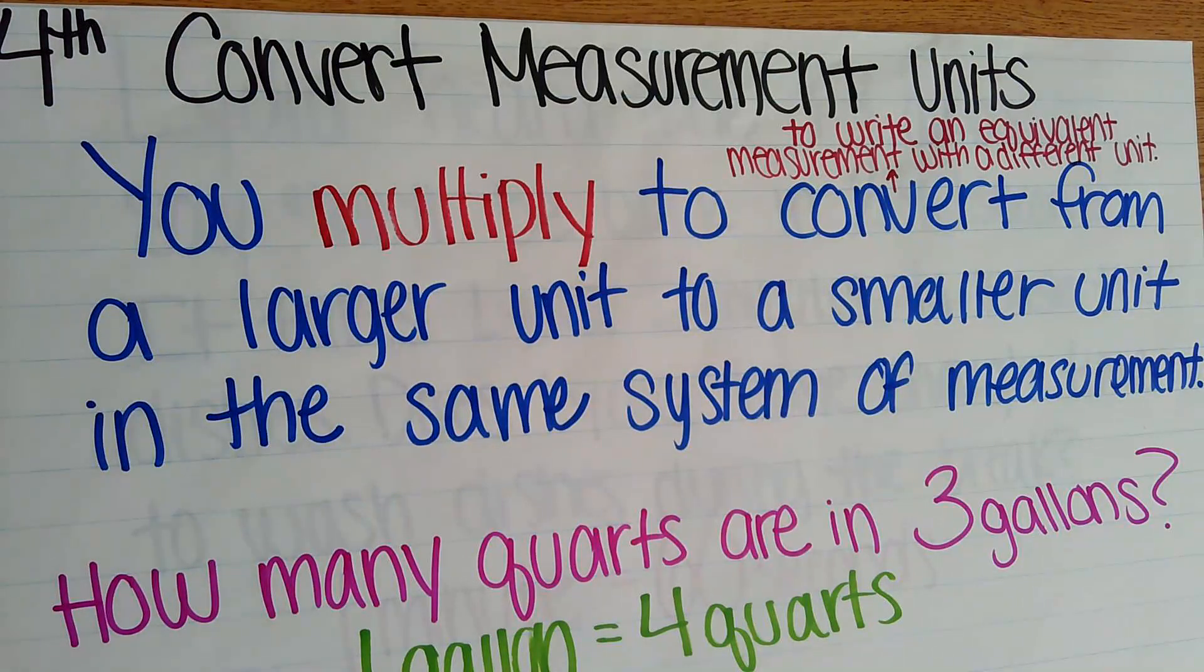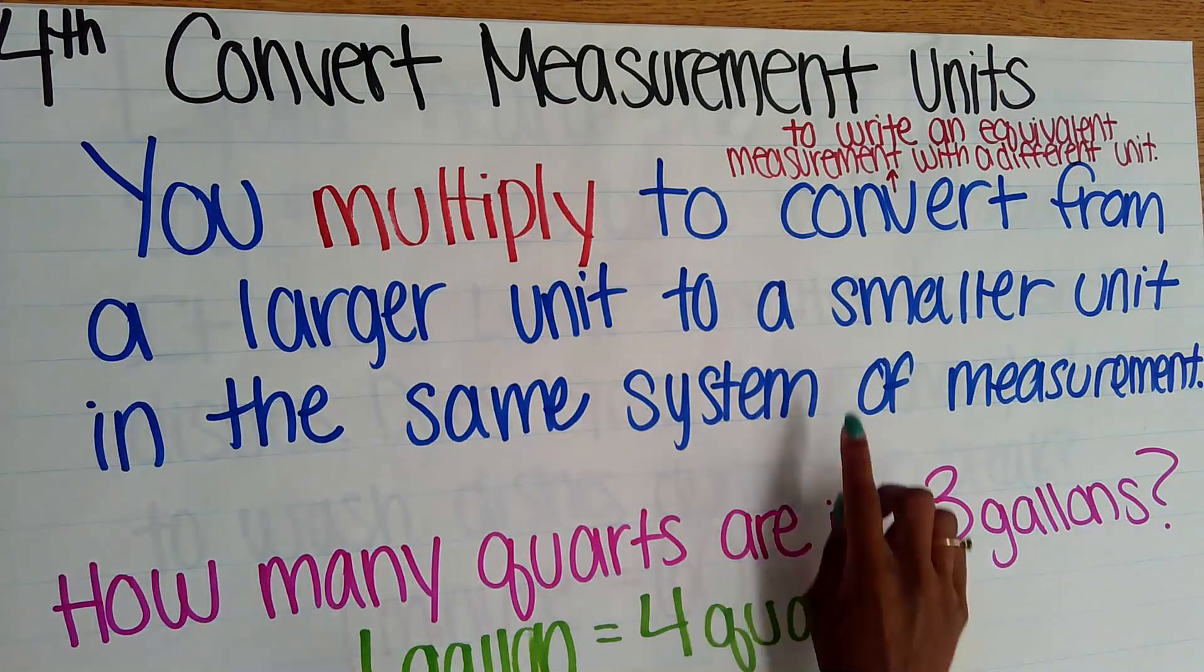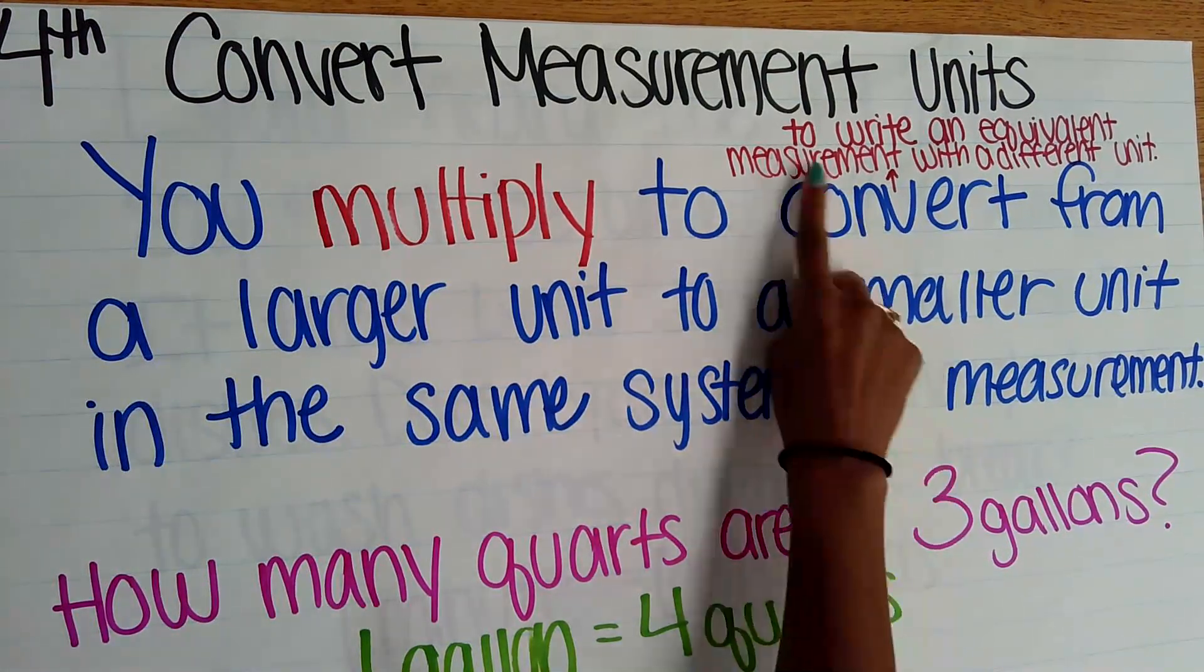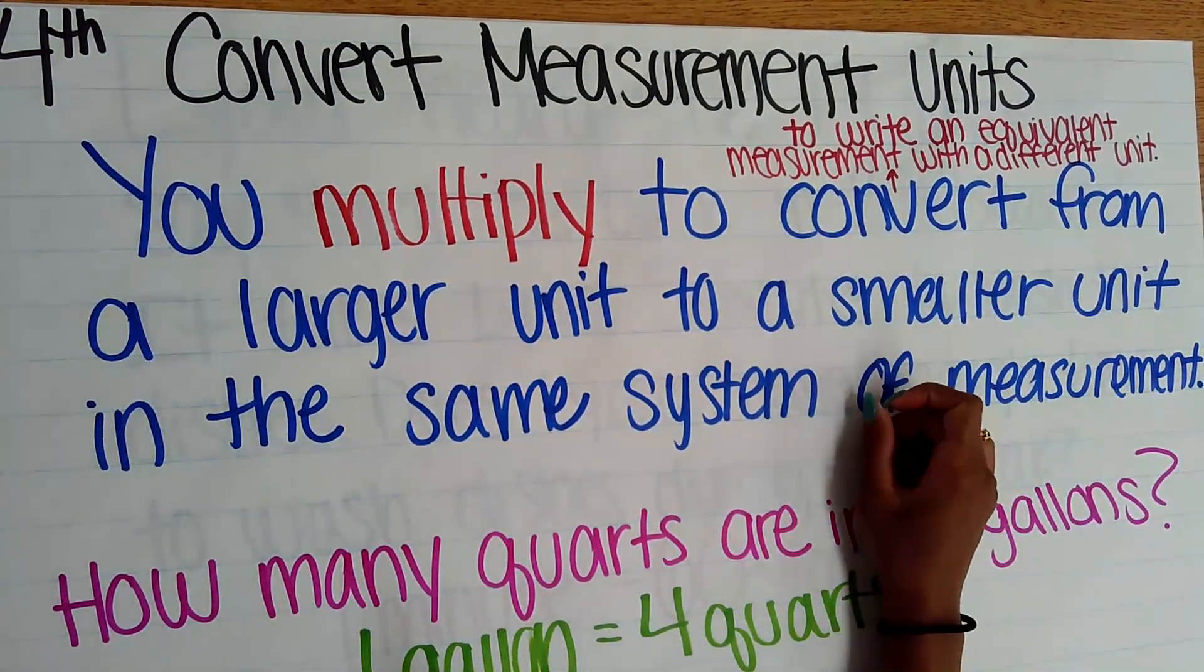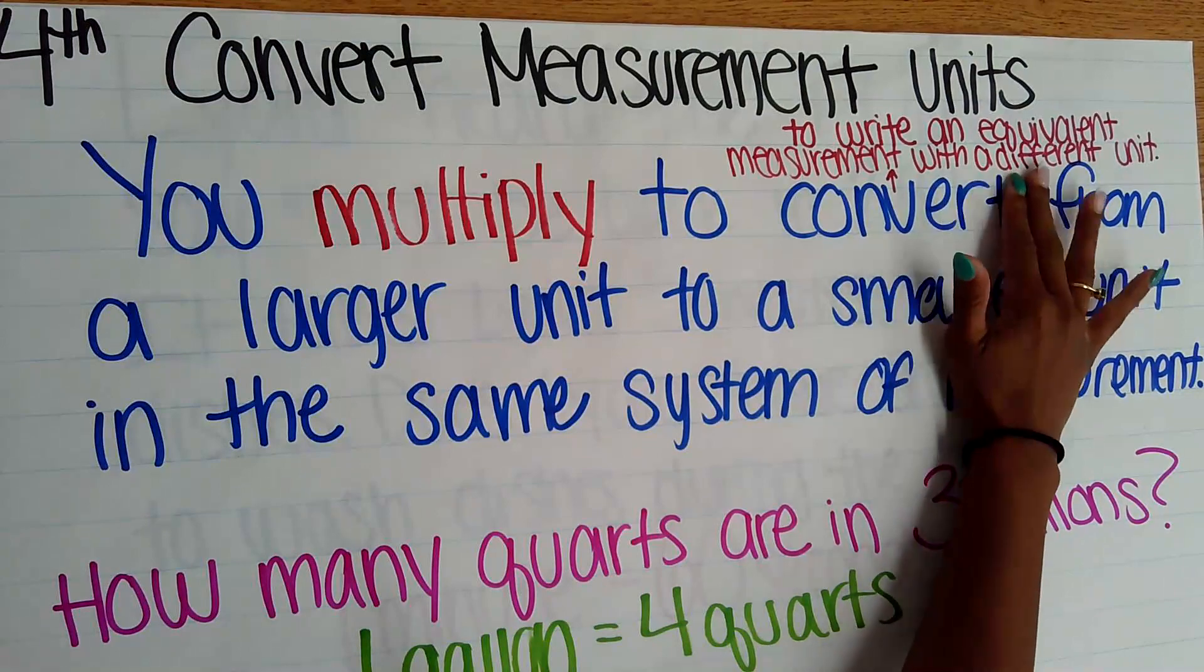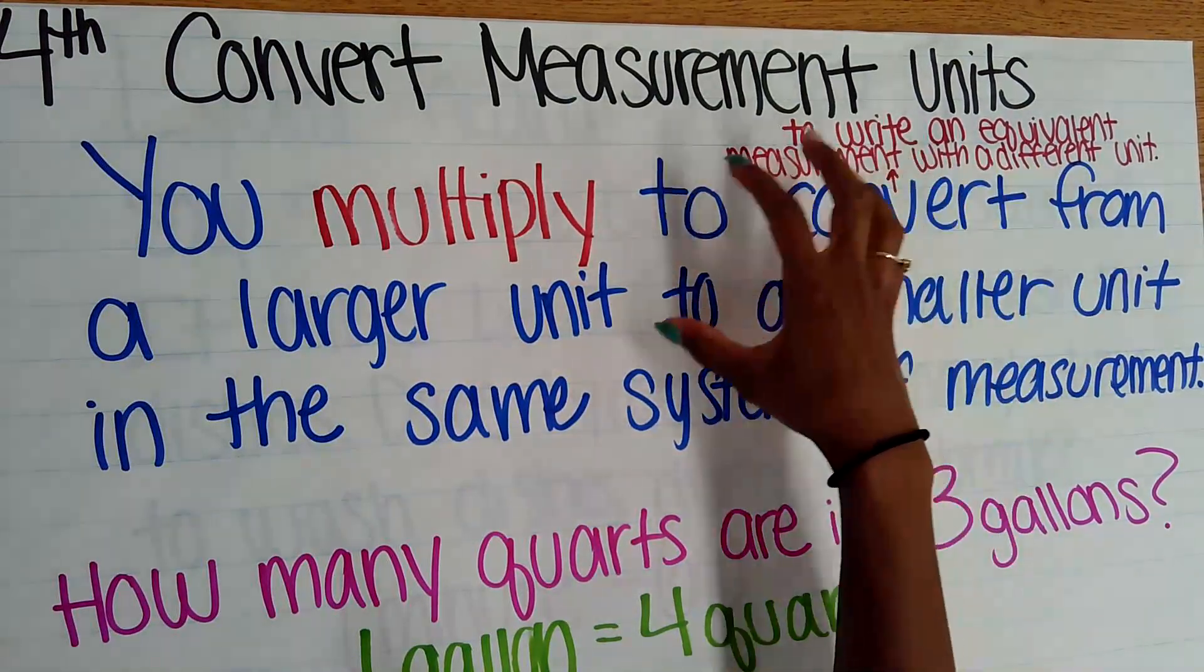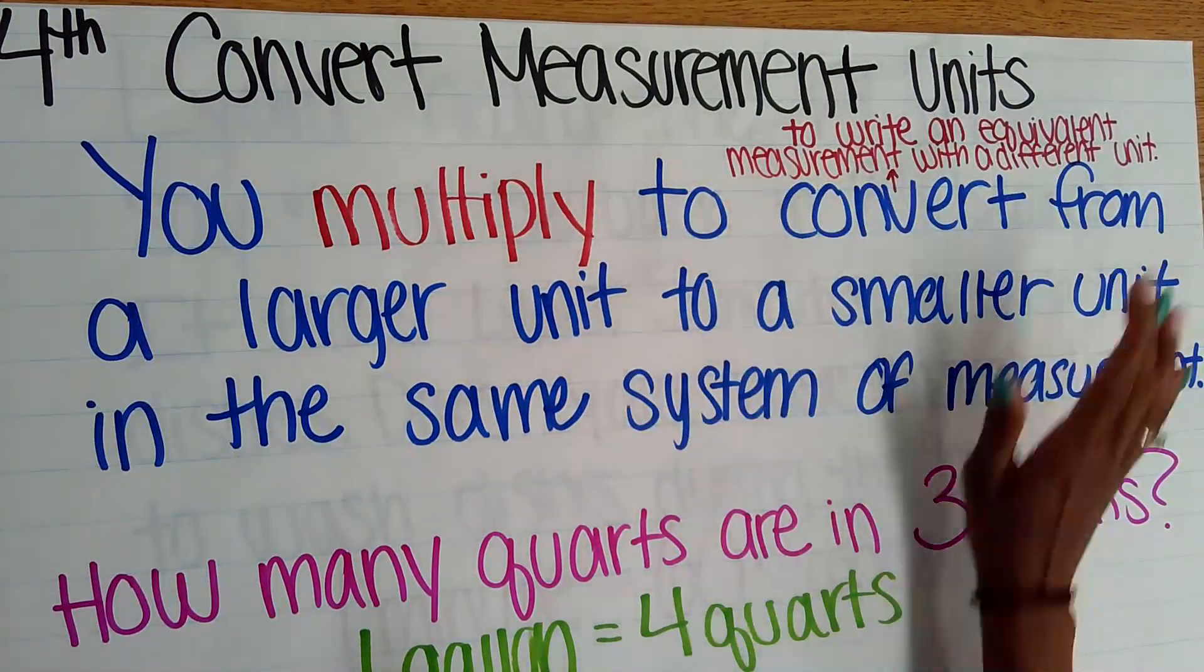In fourth grade, when we get to converting measurement units, students will use multiplication to convert from a larger unit to a smaller unit in the same system of measurement. When we see this word 'convert,' it just means to write an equivalent measurement with a different unit. It takes up the same amount of space, we're just using a different measurement unit. So we're changing from one unit to another unit.